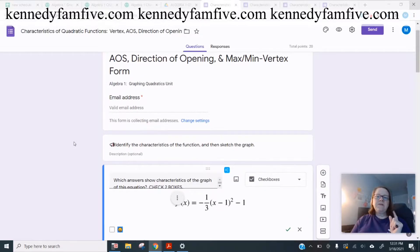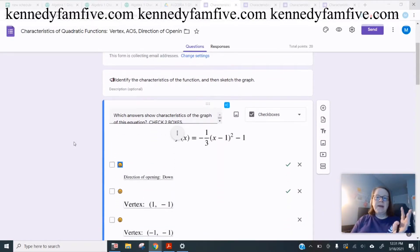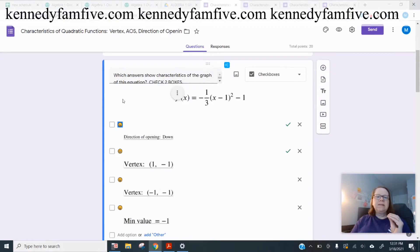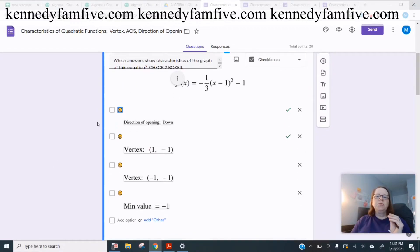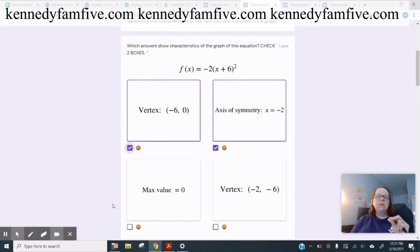So this one just looks at vertex, axis of symmetry, opening up or down, and min or max. And so what I did was I set these up as they have to look at the function. This is the vertex form. And they have to choose the two right answers. So they're going to check two boxes. Let me show you the student version.